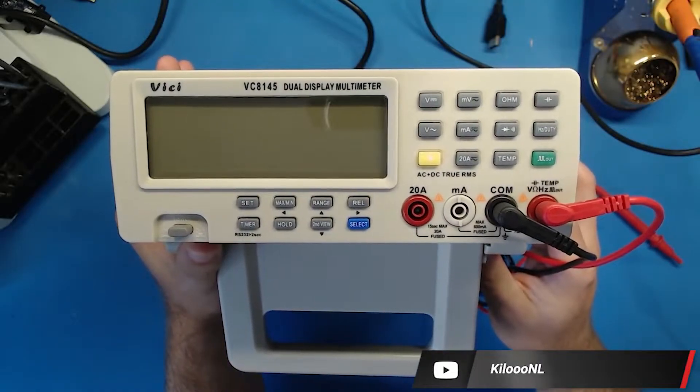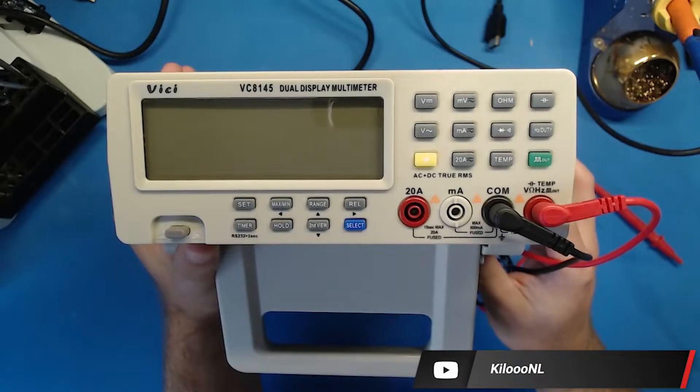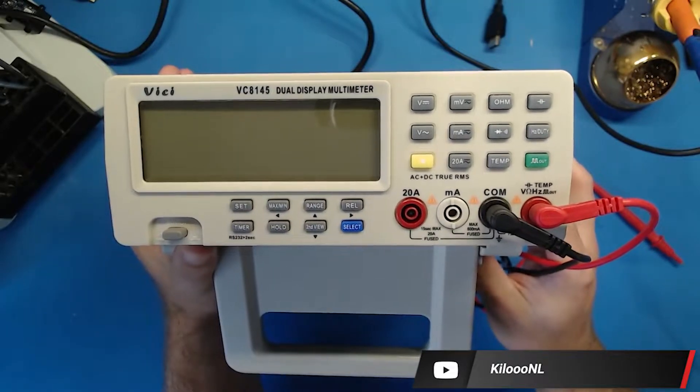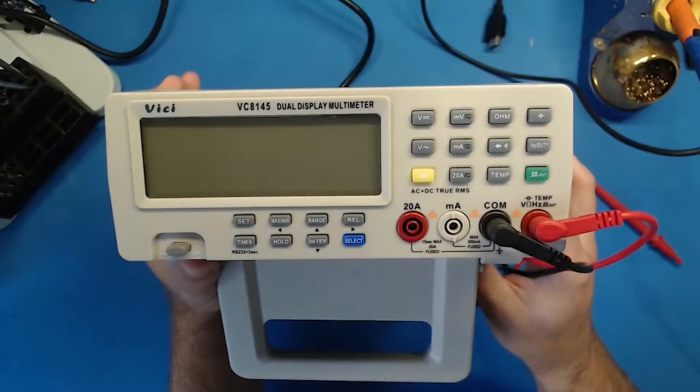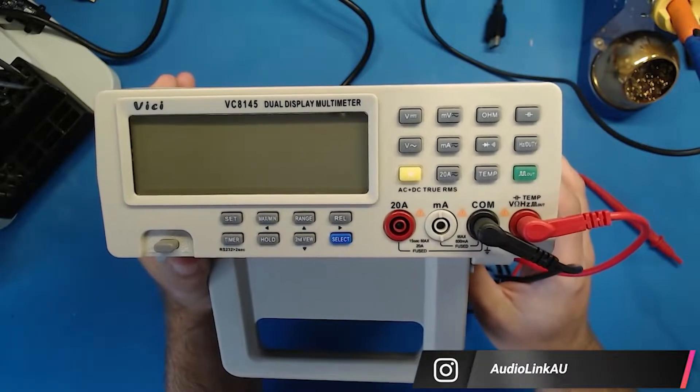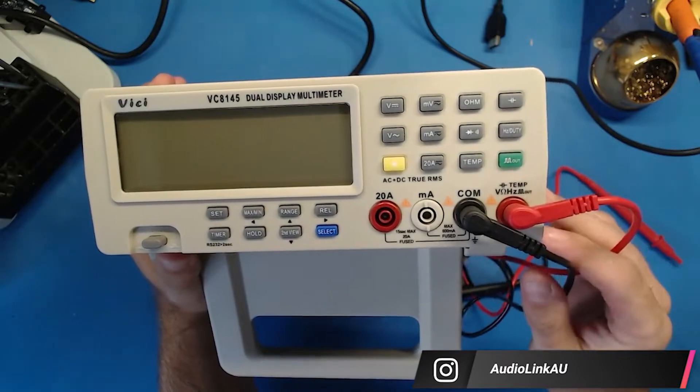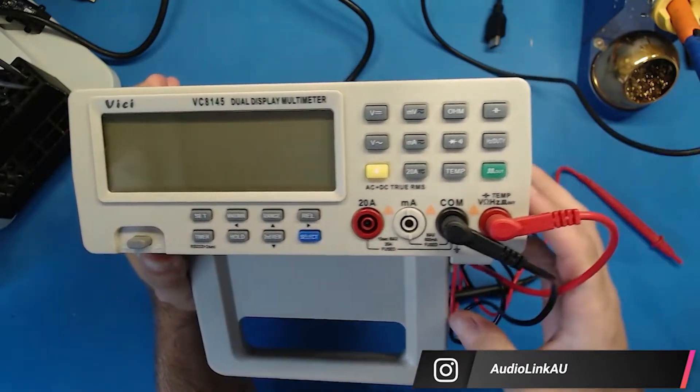Hello everybody and welcome back to another let's try to fix it video. In today's video we have this Vici or Vissy 8145 multimeter. This is a desktop or benchtop multimeter. It's handy instead of having a handheld you can just leave it on the bench.